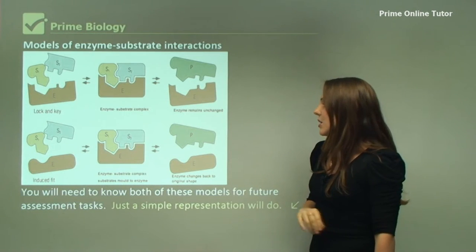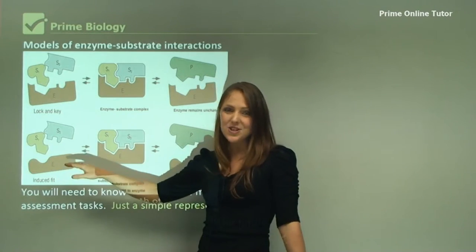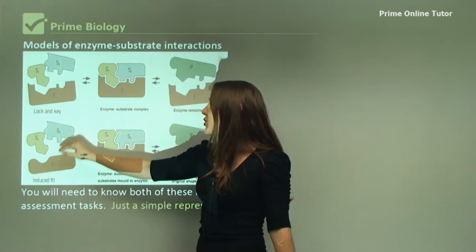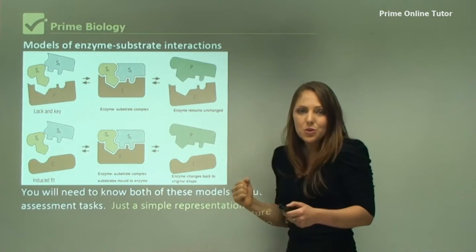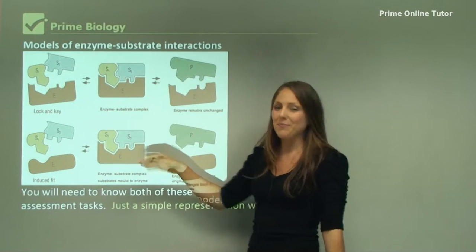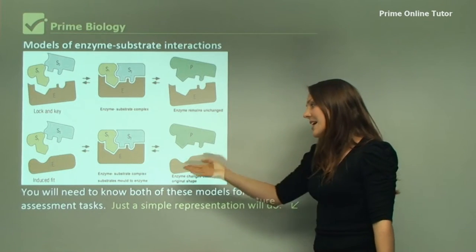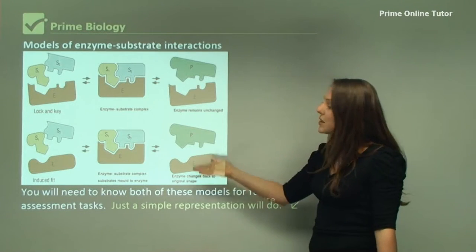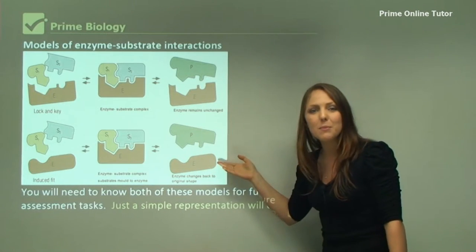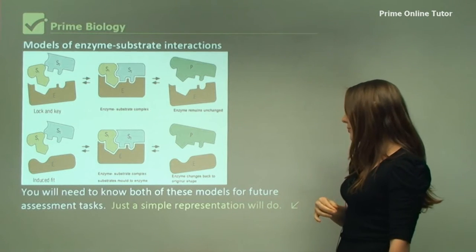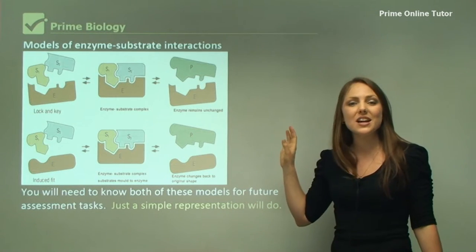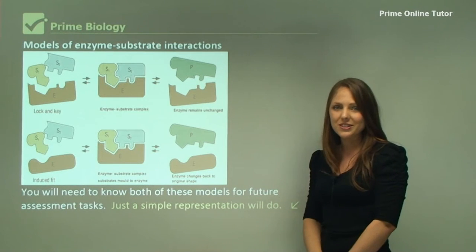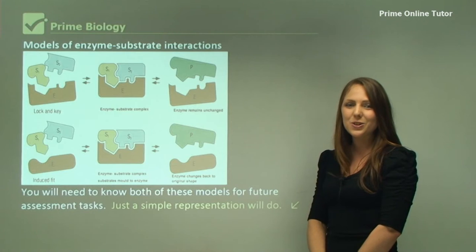With the induced fit, you can see here that the enzyme has a specific shape but it's not complementary to the substrates. The substrates come, bind, and actually move into the groove of the enzyme, and then the enzyme substrate complex forms, holds it, and then makes the product. When the product is released, the enzyme does return to its normal shape. Just this simple representation will do for your final examination in answering the questions. Thank you, that concludes this video.